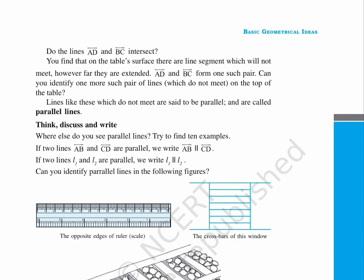Think, discuss and write. Where else do you see parallel lines? Try to find ten examples. If two lines AB and CD are parallel, we write AB, two vertical lines, CD.